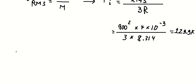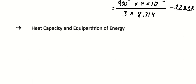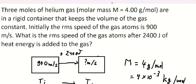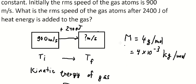Now that we have the initial temperature, we use the second formula. The heat added Q equals n times Cv times delta T. We have T initial = 129.914 K. The value of Cv for a monatomic ideal gas is 3/2 R. We need to find delta T. We have n = 3 moles, and R = 8.314.